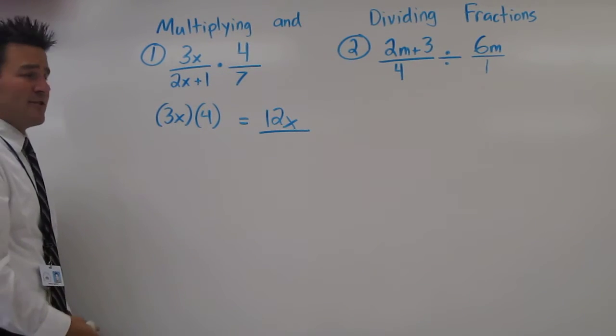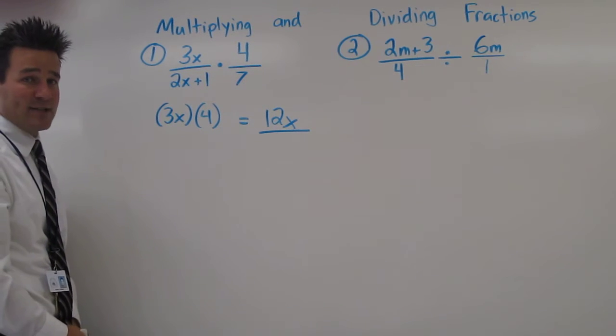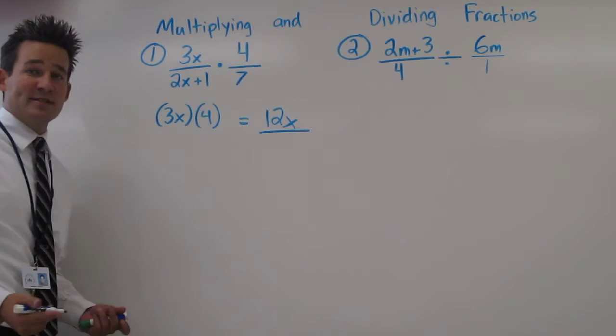Now, when looking at the denominators here, we have a binomial, 2x plus 1, and a monomial, the 7.